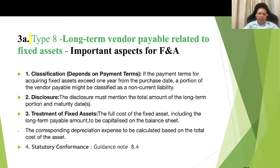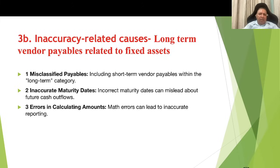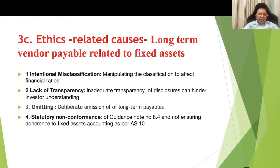Statutory conformance: please refer to guidance note 8.4. Inaccuracy-related causes for long-term vendor payables related to fixed assets are: misclassification of payables, inaccurate maturity dates, and errors in calculating amounts — similar to the previous liability. Ethics-related causes are also similar: intentional misclassification, lack of transparency, omitting non-current liabilities, and strategy non-conformance, particularly with respect to fixed assets reporting as per guidance note 8.4 and AS 10.